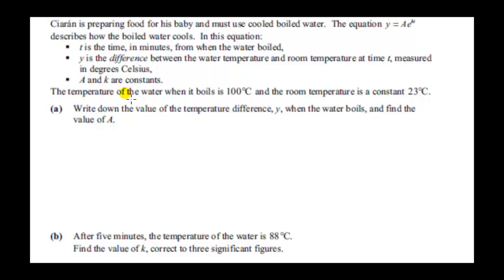The temperature of the water when it boils is 100 degrees centigrade, so this is T equals zero — this is when the timer is set to zero. As time goes on, this temperature decreases; the water cools down. The room temperature is held at a constant 23 degrees centigrade.